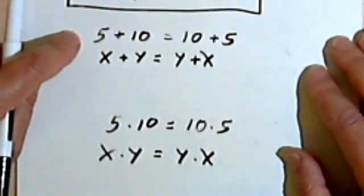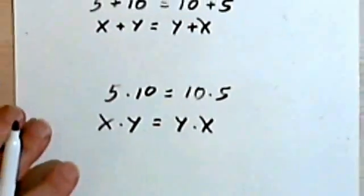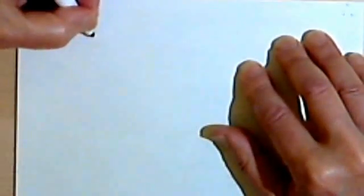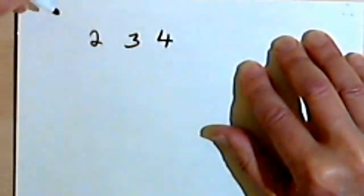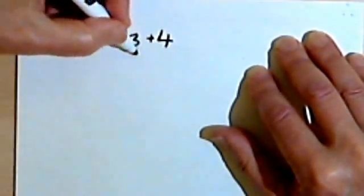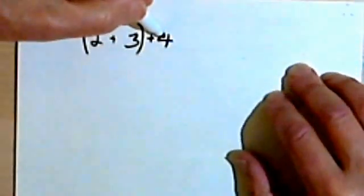Okay, so we have the commutative property of addition and the commutative property of multiplication. Let's go on to the associative property. So let's say we have 3 numbers. I don't know, let's say we have 2, and 3, and 4. We want to add them. Well, we could either add the 2 and the 3 together first, and then add the 4.